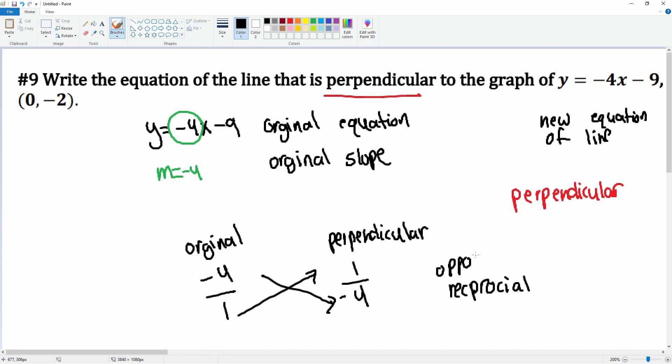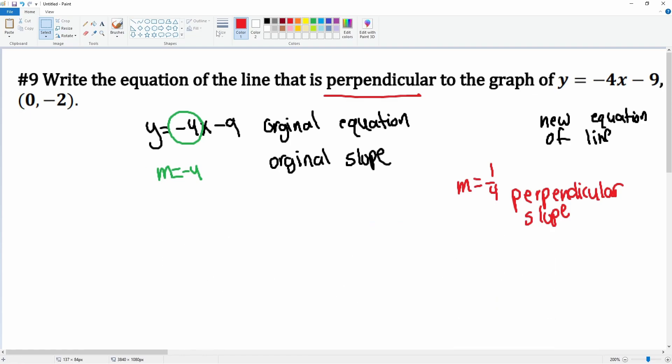Then you want the opposite of it. So the negative becomes a positive. So here, the perpendicular slope that we just found is m is equal to positive 1 over 4. That is the slope that is perpendicular to it.